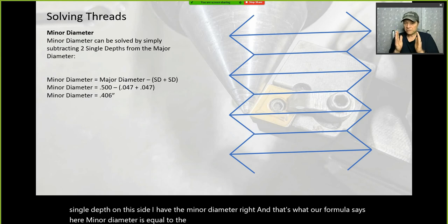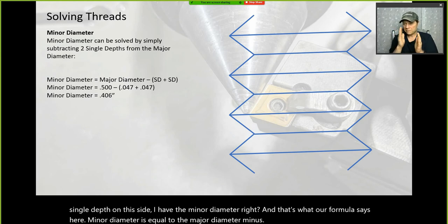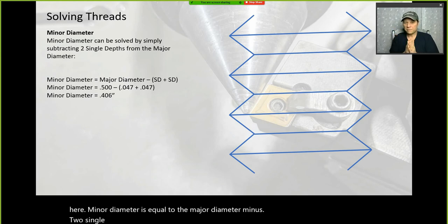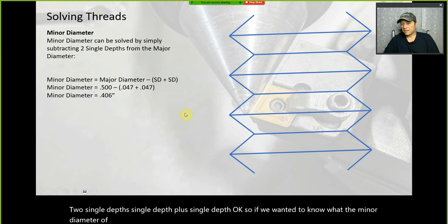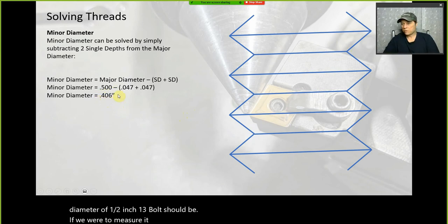The formula is: minor diameter equals major diameter minus two single depths. So if we wanted to know the minor diameter of a half-inch 13 bolt, it should measure 0.406.